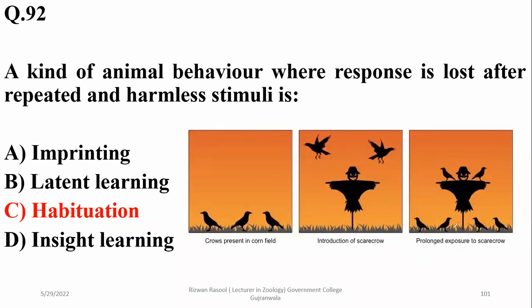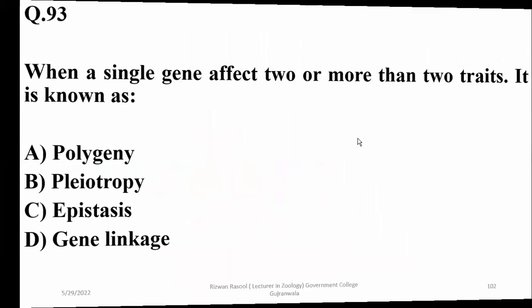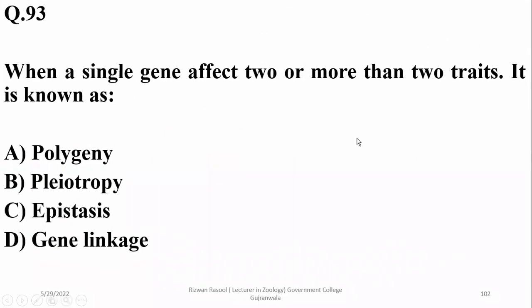Initially it will be a threat, but after prolonged exposure animals will become used to it. When a single gene affects two or more traits, it is known as pleiotropy.